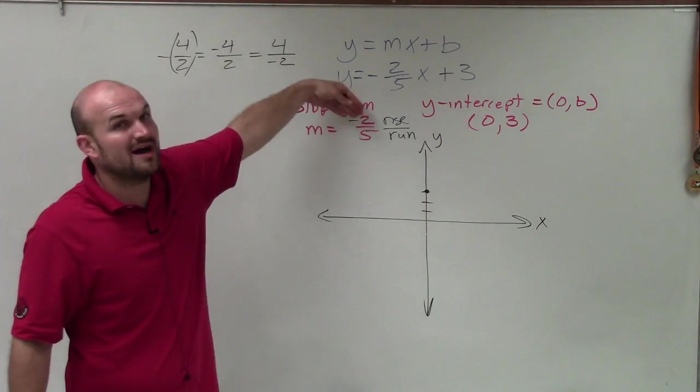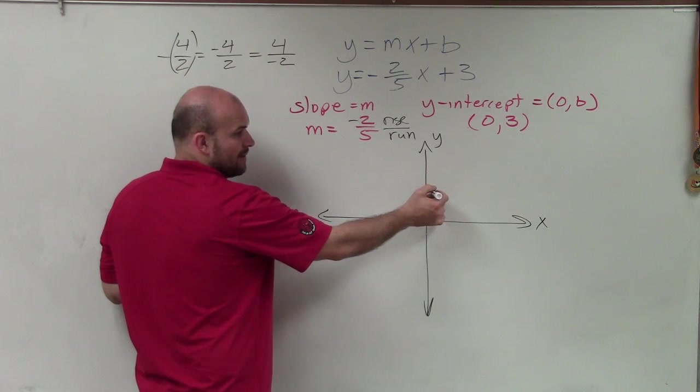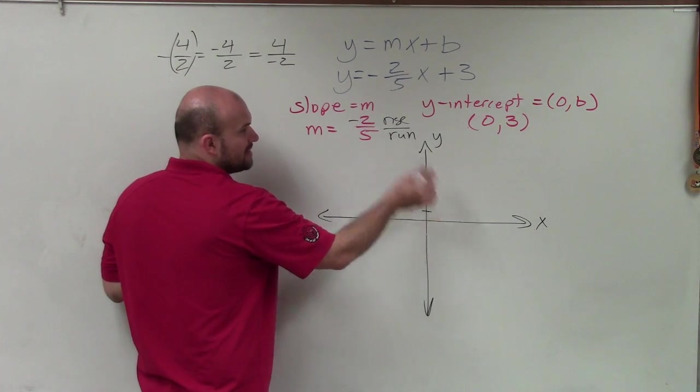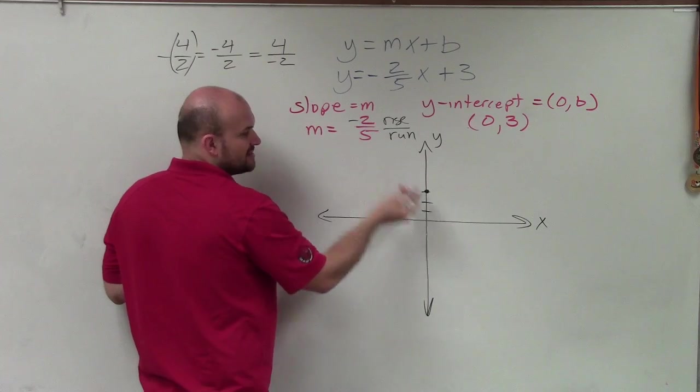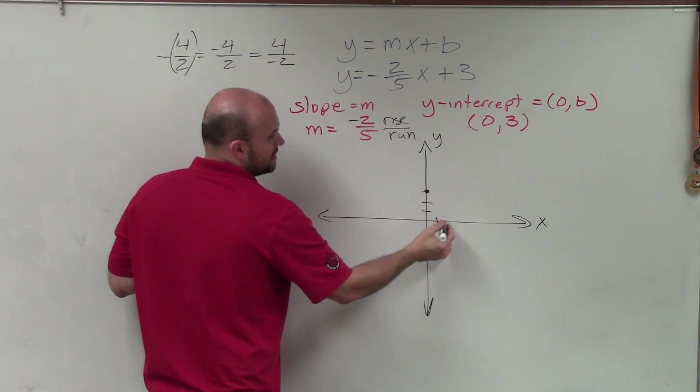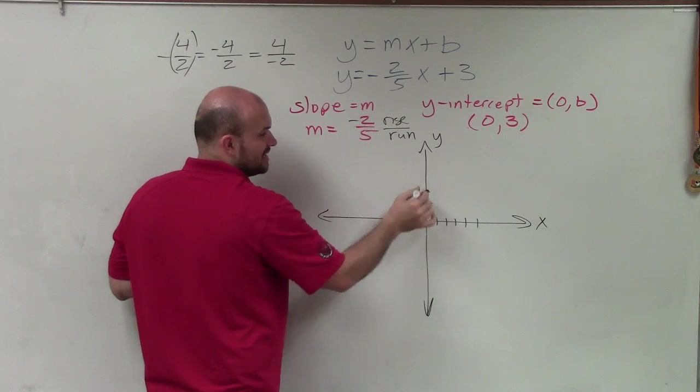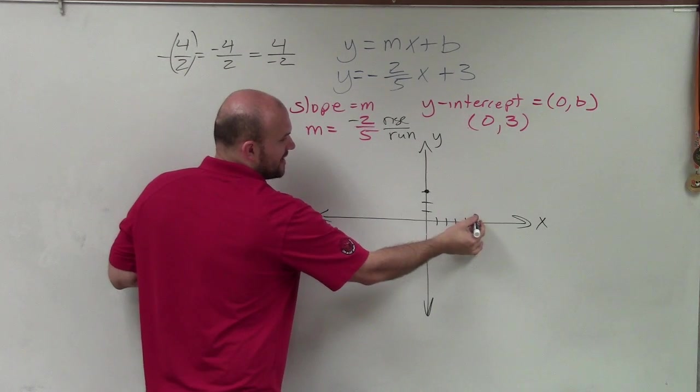So therefore, the change in the y-value is negative 2. That means from my point at my y-intercept, I'm going to go down 2, and then the change in the x is positive 5. That means since the change is positive, I'm going to go to the right 5: 1, 2, 3, 4, 5. So I'm going to go down 2, since the change in the y-coordinate is negative, and then I'm going to go over 5.